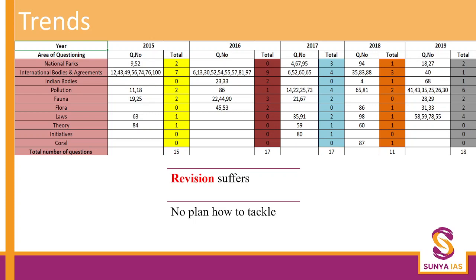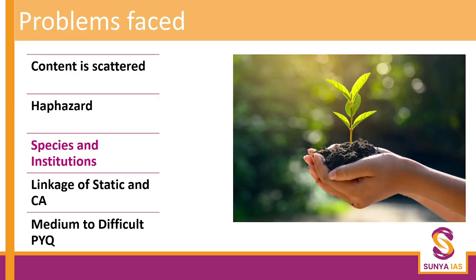Second, because the material is not organized, they are not able to comprehensively prepare. Hence, their revision suffers and there is no plan on how to tackle the questions related to environment. If you are not able to tackle those 20 questions properly, then your chances of clearing prelims gets very difficult. This is the problem which we want to solve through this course, because we understand the problems you are facing.